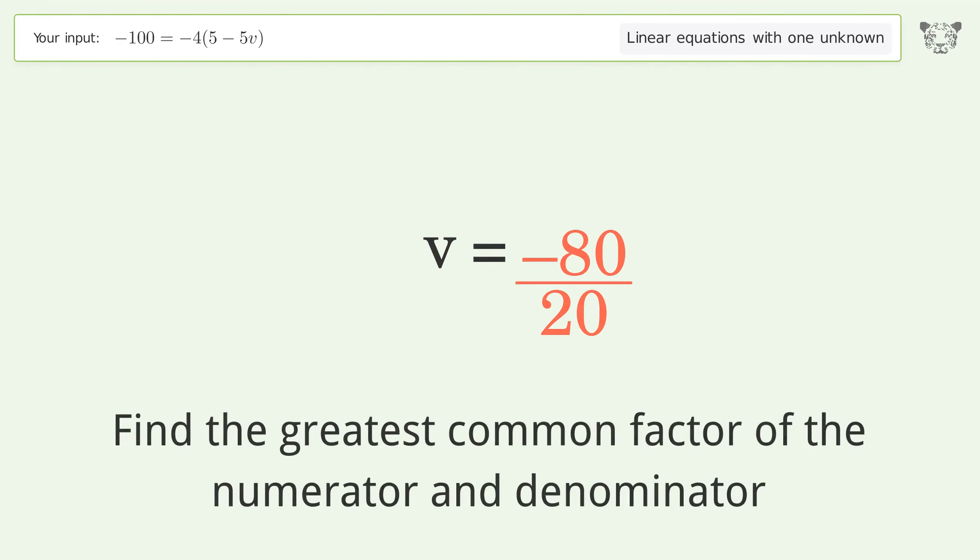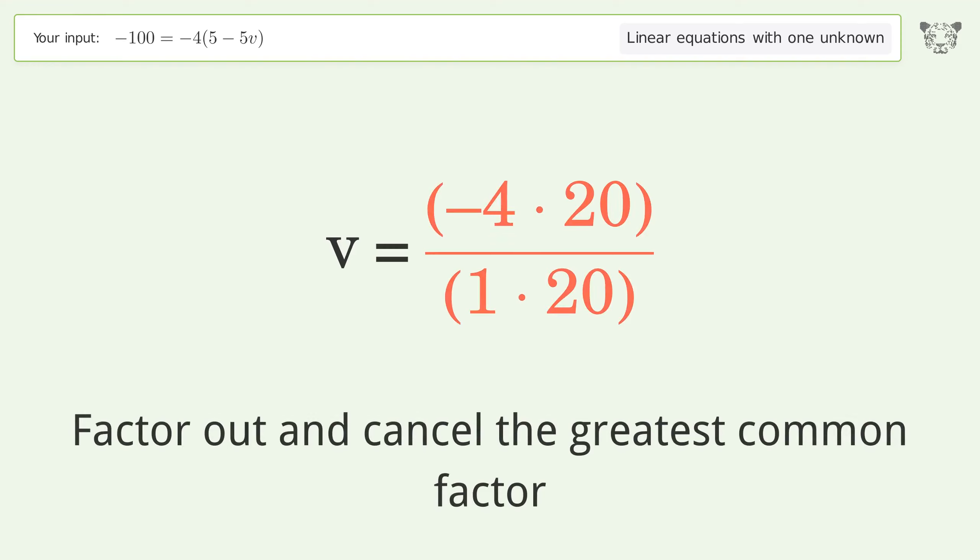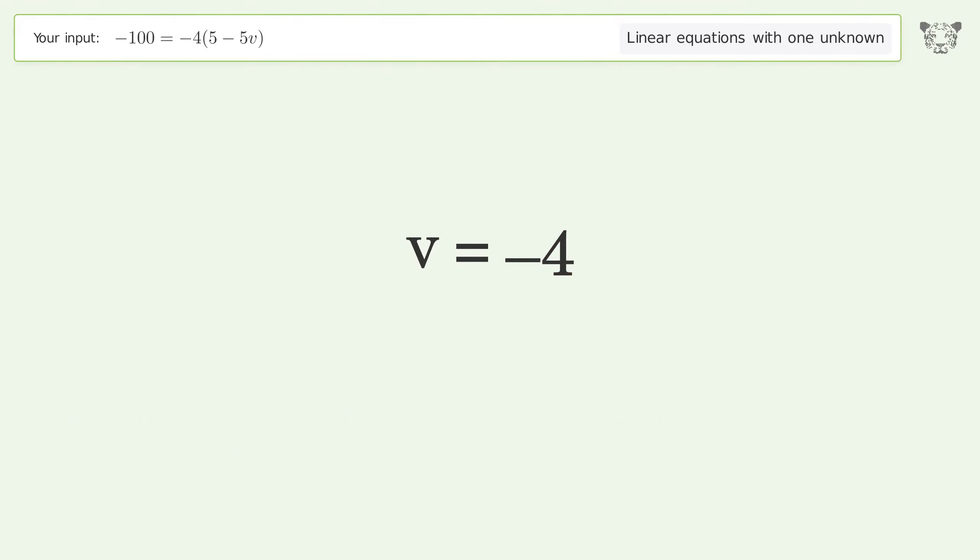Find the greatest common factor of the numerator and denominator. Factor out and cancel the greatest common factor. And so the final result is v equals negative 4.